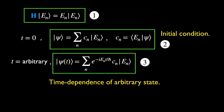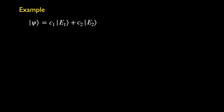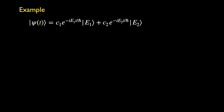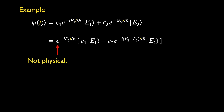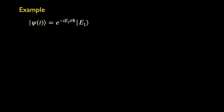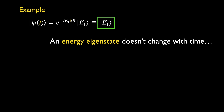A simple example: consider a state that is a superposition of just two energy eigenstates. This state evolves in time by adding phases of eigenvalues to the corresponding energy eigenstates. An overall phase can be pulled out of the expression; this phase is unphysical, as it does not affect subsequent measurement probabilities. The actual physical changes due to time evolution are caused by the relative phases between the energy eigenstates. This implies that if we start with just one energy eigenstate, this state will not change with time, which is why these states are also called stationary states.